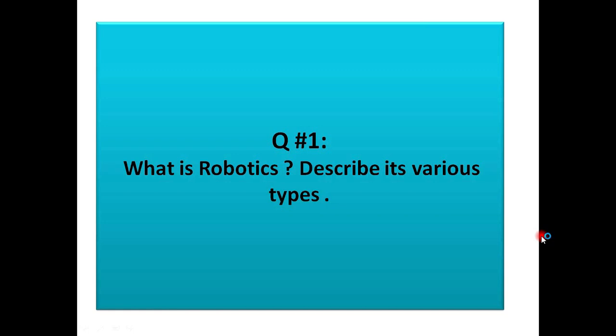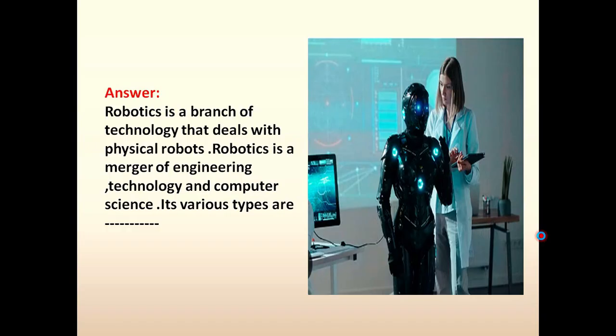Keep in mind the question statement. Answer is: Robotics as a branch of technology that deals with the physical robots. Robotics is a merger of engineering, technology, and computer science. Its various types are robotics to have merger ka matlab kya hota hai, it is the multiple, it can perform the multiple tasks.